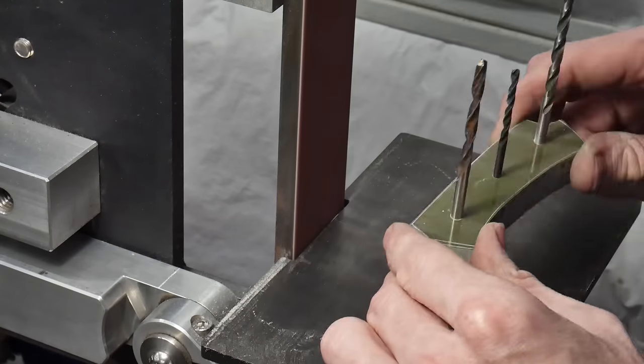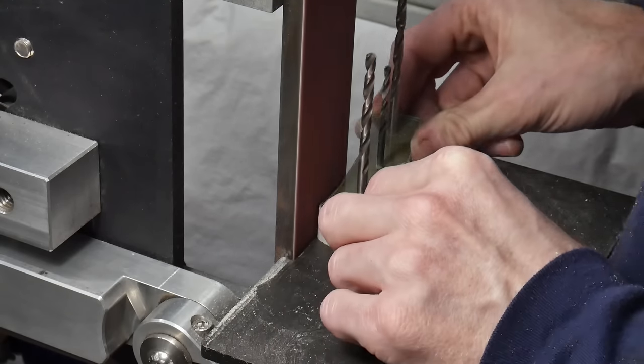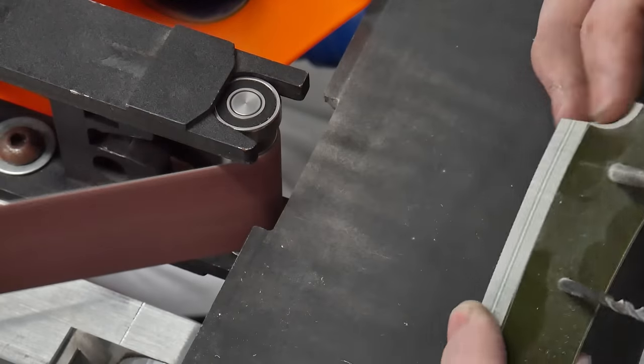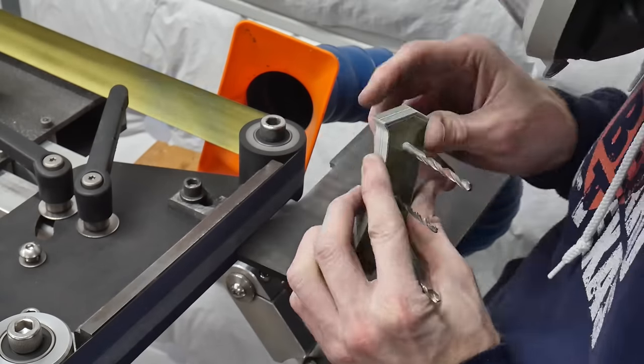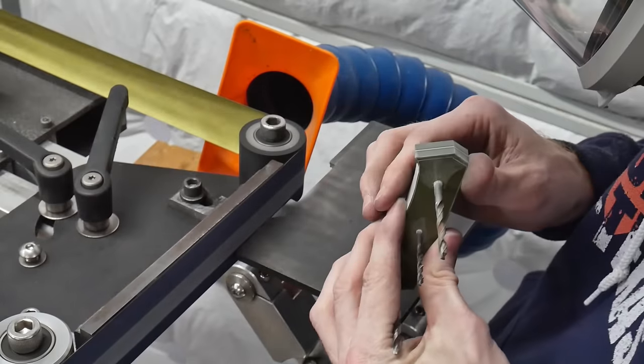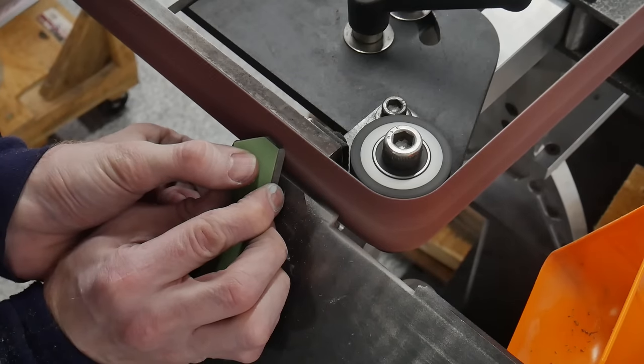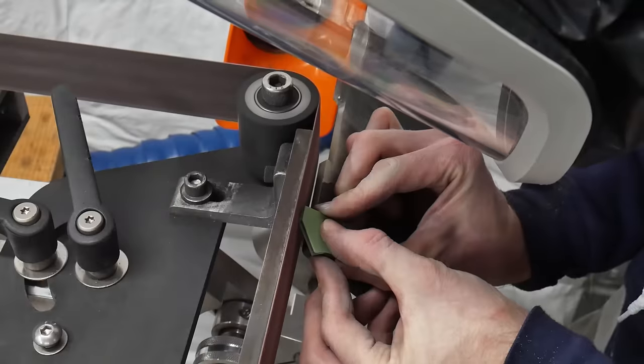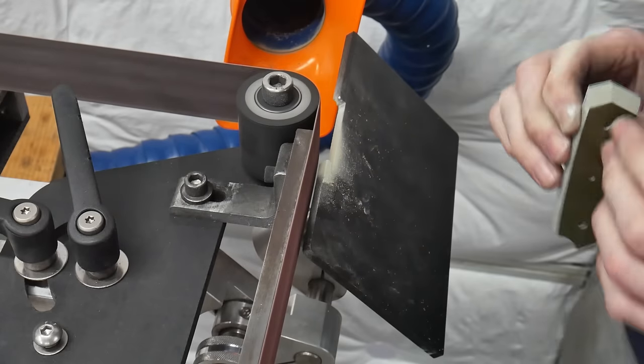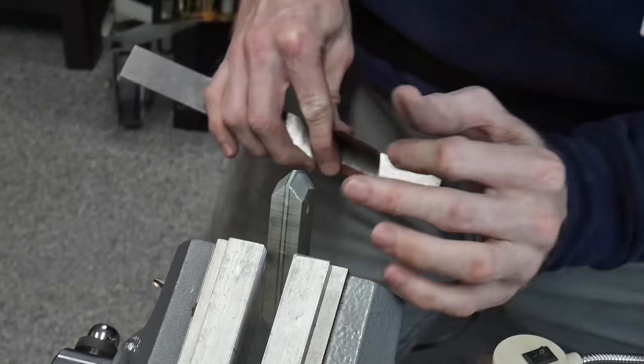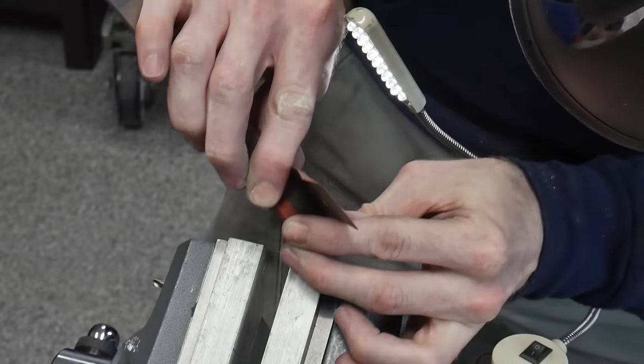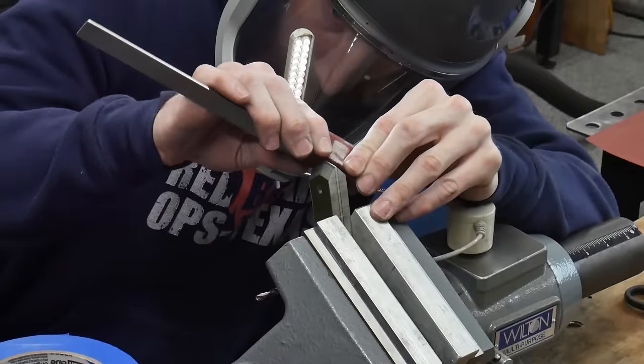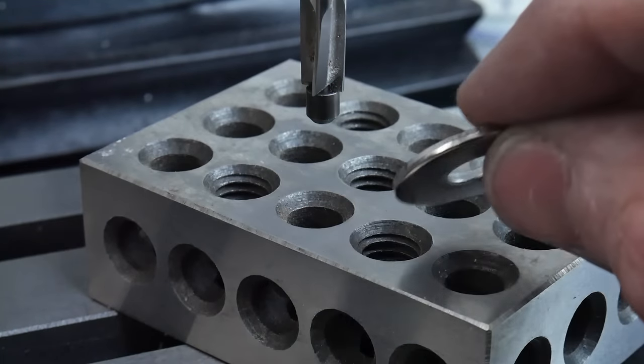We'll then crank up the belt grinder to refine our profile with a 60 grit belt and get everything squared nicely on our work rest. It's at this point, before epoxying the scales to the blade, that we will clean up the front of our handle scales as well as the bevel on the back of the scales where our lanyard hole will be. I decided to go with a more angular design on the front of these handle scales and I really like the way it turned out. On the hand sanding bench, I work both the front portion of the scales and the back bevels by the lanyard hole up to a 1000 grit finish.